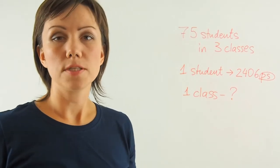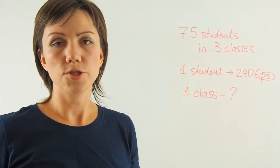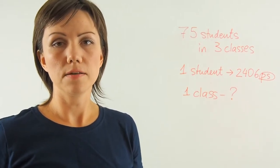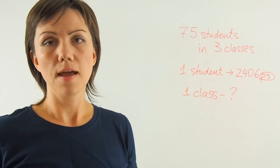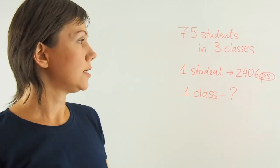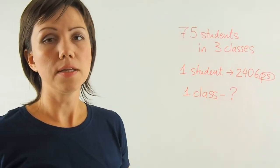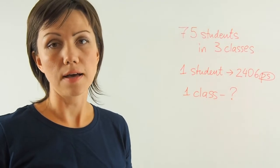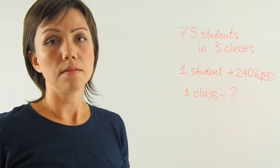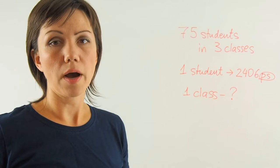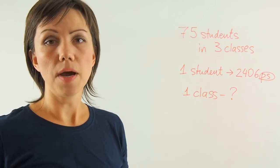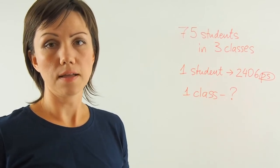So in this problem we're dealing with a similar situation where you need to calculate the rate per one unit. In this case you need to find out how many students are in one class and then multiply the number of popsicle sticks required for one student by the number of students in that class.